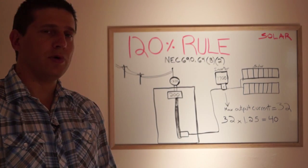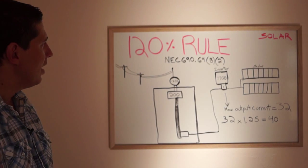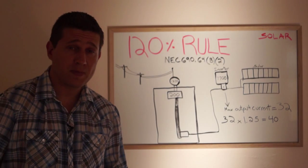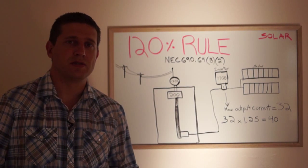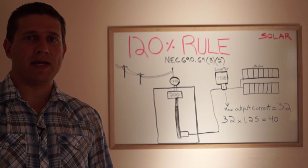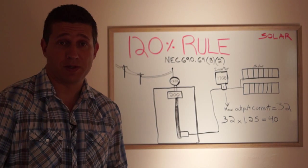This rule references code NEC 690.64B2. Now this is a really important code for us solar designers looking at designing a system to maximize solar production on residential and commercial homes.